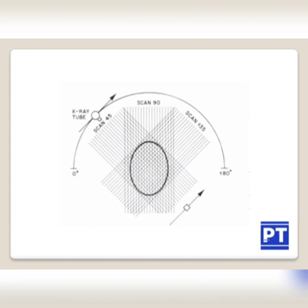The X-ray beam was on throughout the linear movement. When it is moving linearly, the X-ray beam is on, and when it is rotating, the X-ray beam is off during the rotatory movement. The total number of transmission measurements was the product of the number of linear measurements — 160 — and rotatory steps — 180 — which was 28,800 in the original EMI scanner.